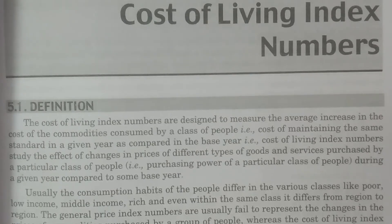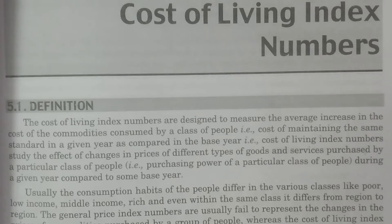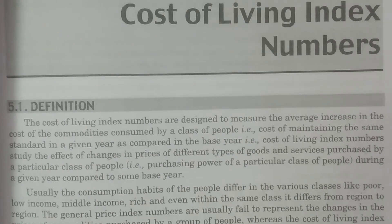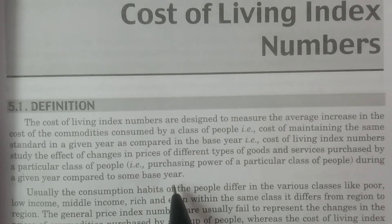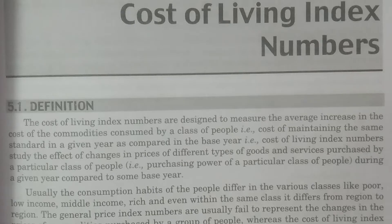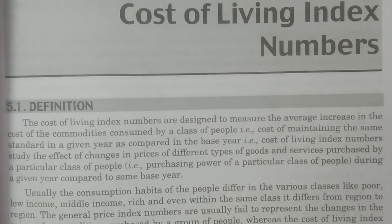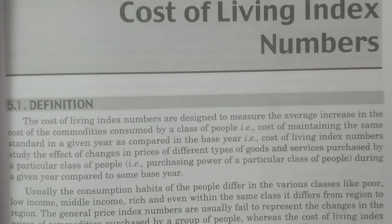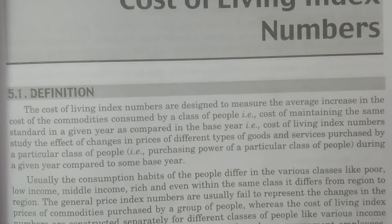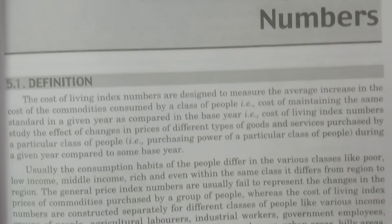We are intended to see the effect of changes in the prices of different commodities, different goods and services purchased by a particular class of people. That is called the purchasing power of a particular class of people during a given year compared to some base year. So this is what we calculate — we see the changes in the cost of living of a group of people from one period to another period. That is the main purpose of calculating the cost of living index number.